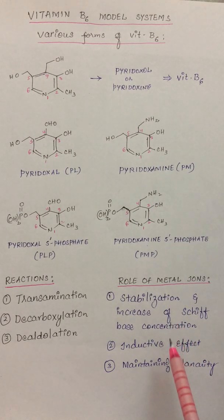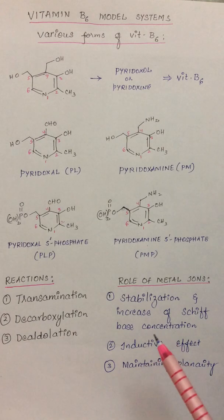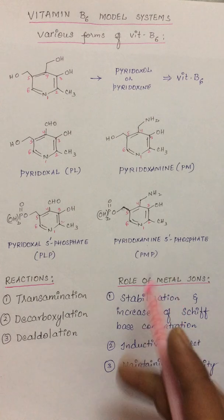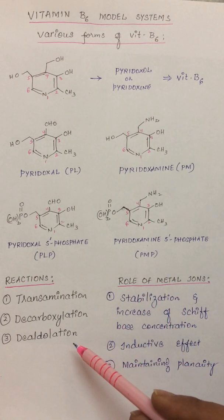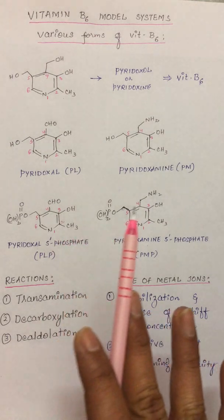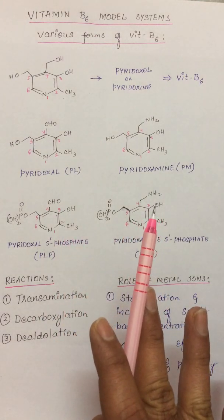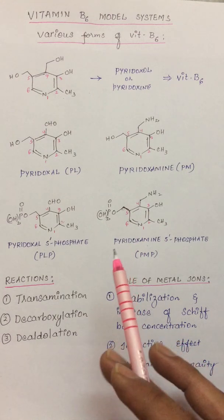These metal ions are cations, therefore they induce some electron withdrawing. As electron withdrawing is induced, that can enhance the rates of the reactions pertaining to transaminations, decarboxylation, and also dealdolation. Once the metal ion is involved in the reaction system, it also leads to the planarity of the intermediates. Even this planarity enhances the rates of the reaction.